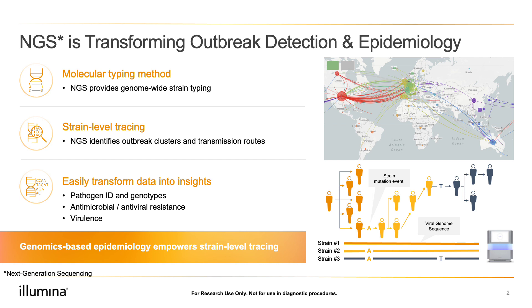NGS provides the whole genome sequence of a virus, which allows researchers to type a strain — that is, tell you which virus is present. More importantly, it allows you to identify SNPs in that viral genome that may lead to variants of interest. During the COVID pandemic, this has been paramount. Many labs are taking a subset of positive samples and sequencing the genomes of them to identify new variants and determine which variants are prevalent and spreading in a population.